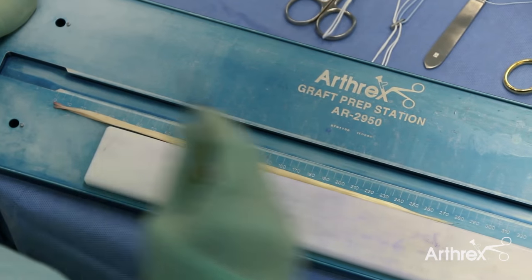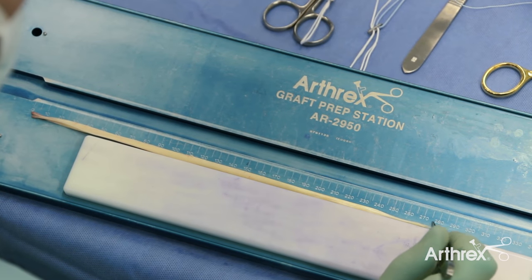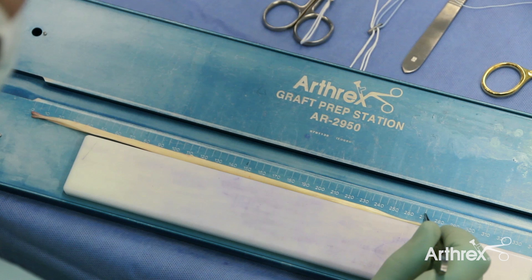As you can see, the graft measures 27 centimeters in length. This can be quadrupled, and with a 27 centimeter graft, this gives between 65 and 70 millimeters in length for the graft link.